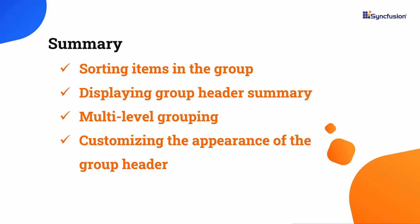In this video, I demonstrated how to programmatically group items based on custom logic, sort groups, display group header summary, implement multi-level grouping, customize group header appearance, and enable groups to expand and collapse. If you want to see a working example, you can download it from the GitHub link provided in the description. I have also included a link to check if you qualify for the community license, which gives you a free license key for the entire .NET MAUI control suite. If you found this video useful, don't forget to like and subscribe. Thanks for watching.